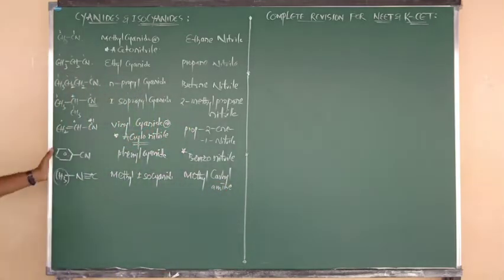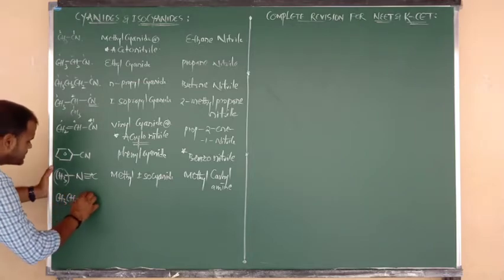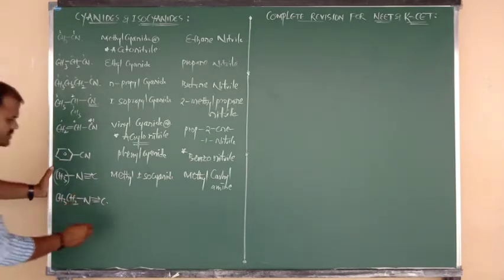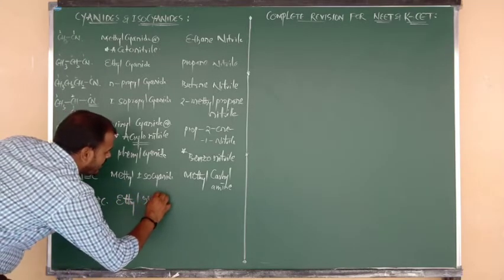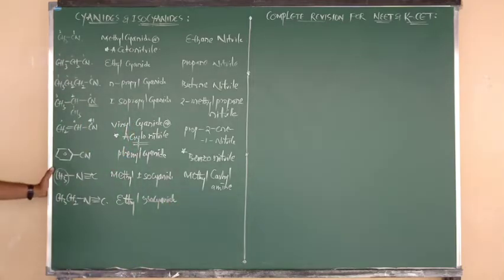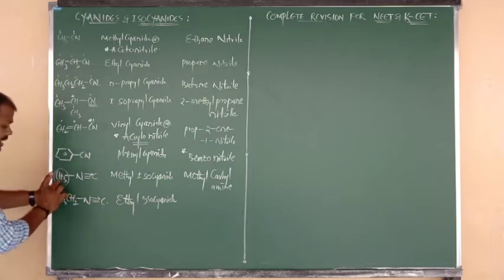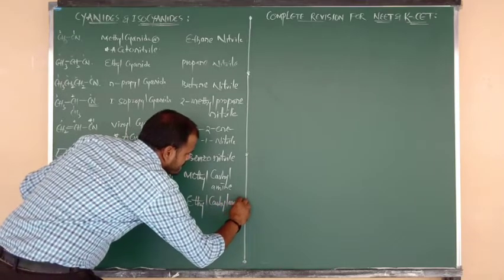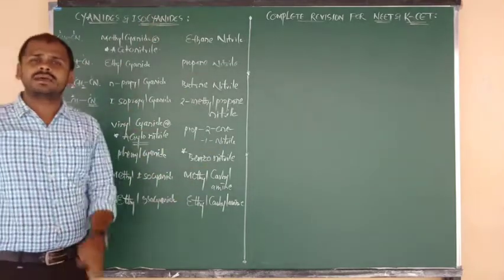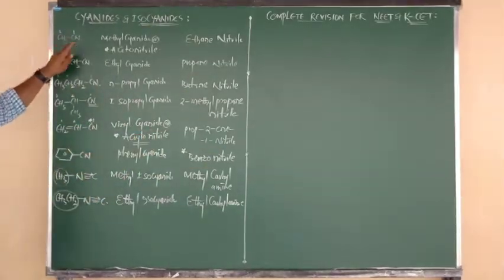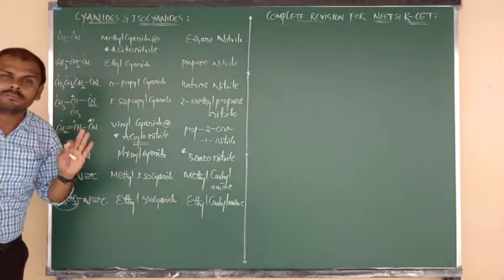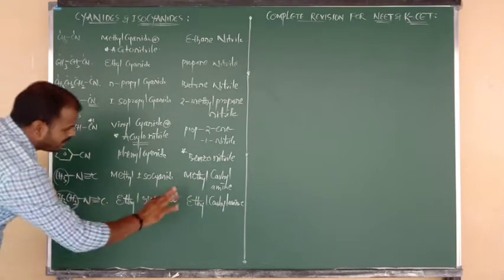Next: CH3CH2NC — this is ethyl isocyanide. Its IUPAC name is ethyl carbylamine. Remember: cyanides and isocyanides are functional isomers of each other. For example, CH3CN and CH3NC are functional isomers. So cyanides and isocyanides are examples of functional isomers.